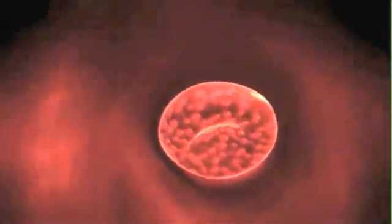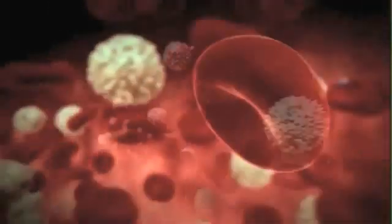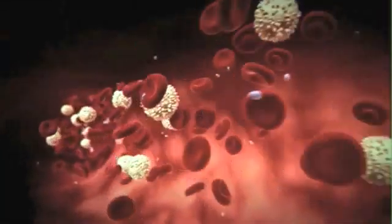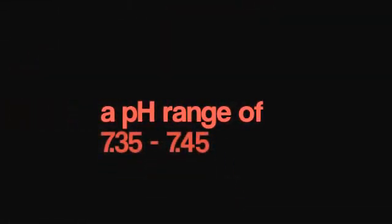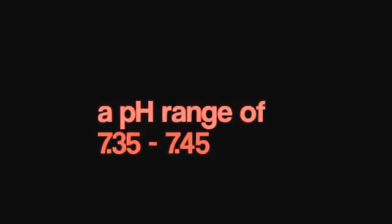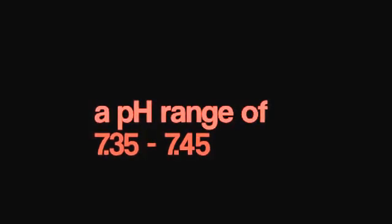Now on to blood. Blood delivers necessary substances such as nutrients and oxygen to the cells, so it is very important to the human body. It is almost equally important to keep the pH levels of blood at a stable rate. Blood has a pH range of 7.35 to 7.45 on a regular basis. Anything out of that range is unhealthy and it could possibly be fatal.